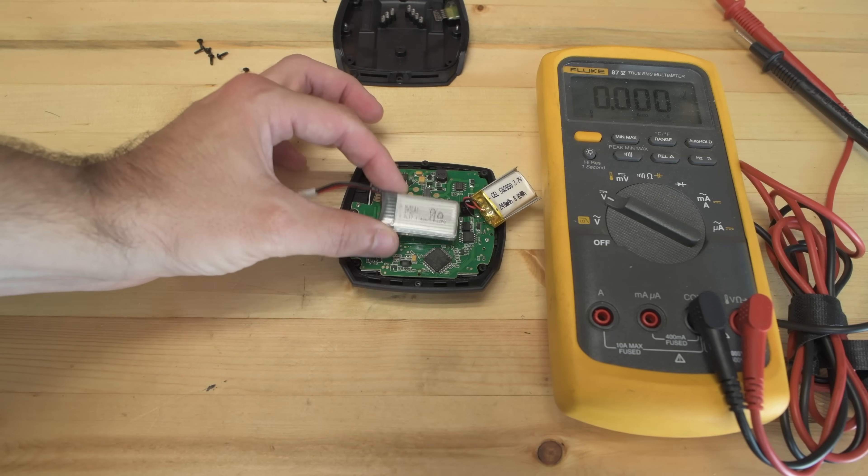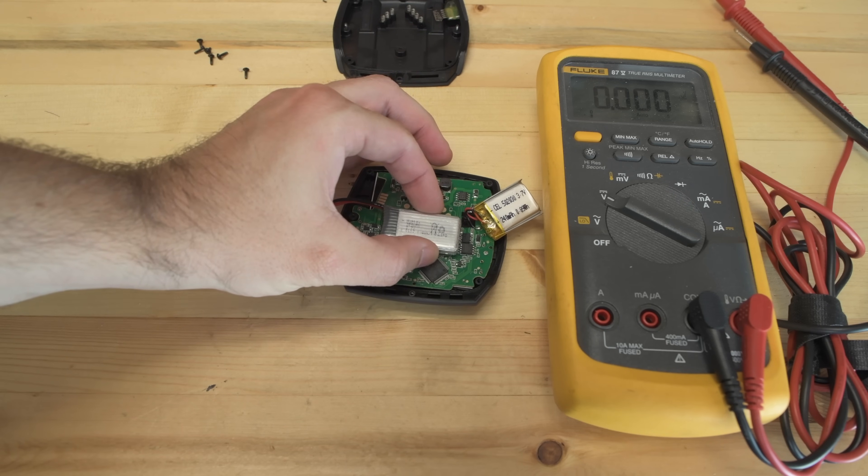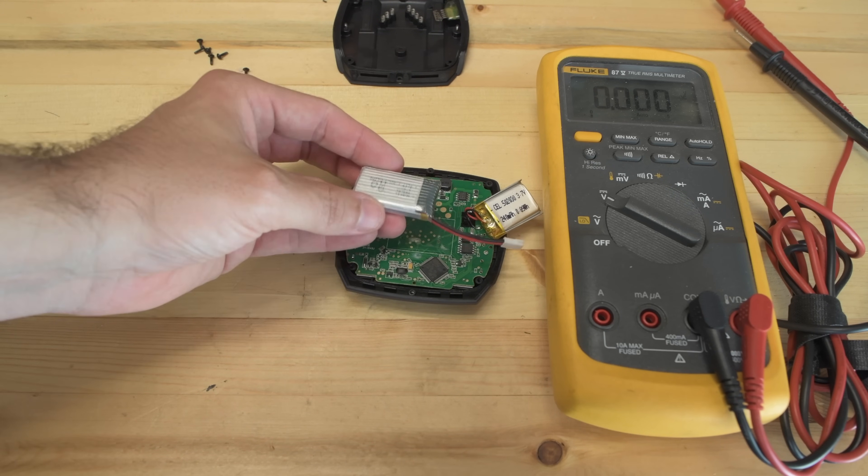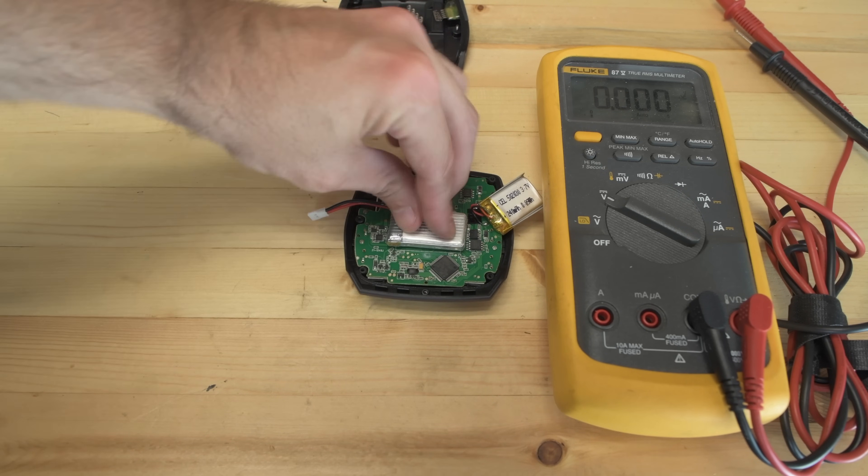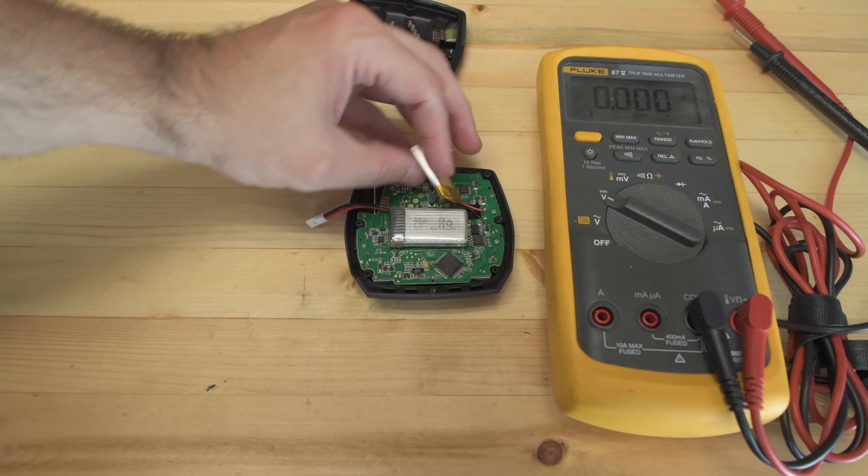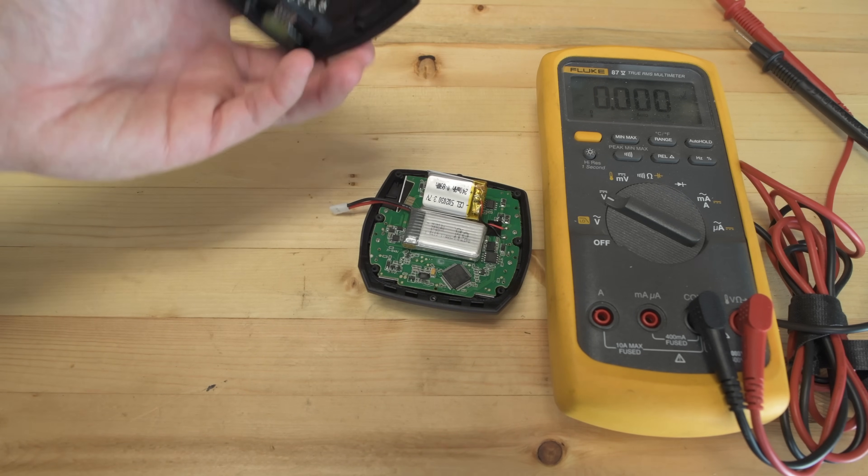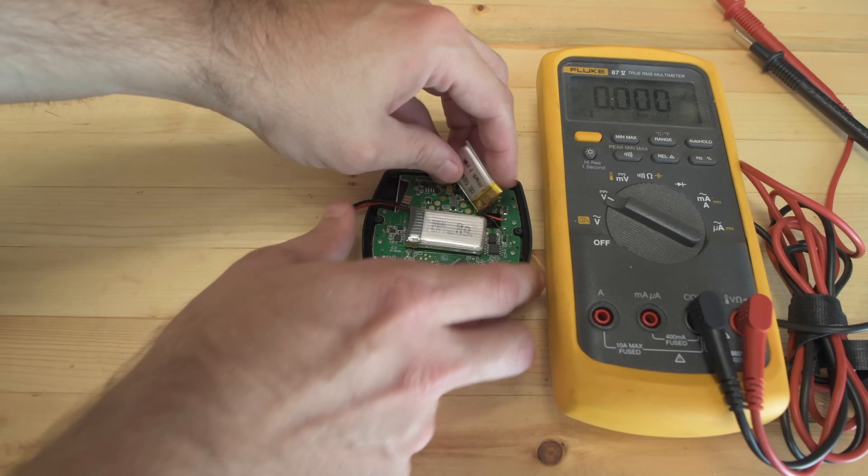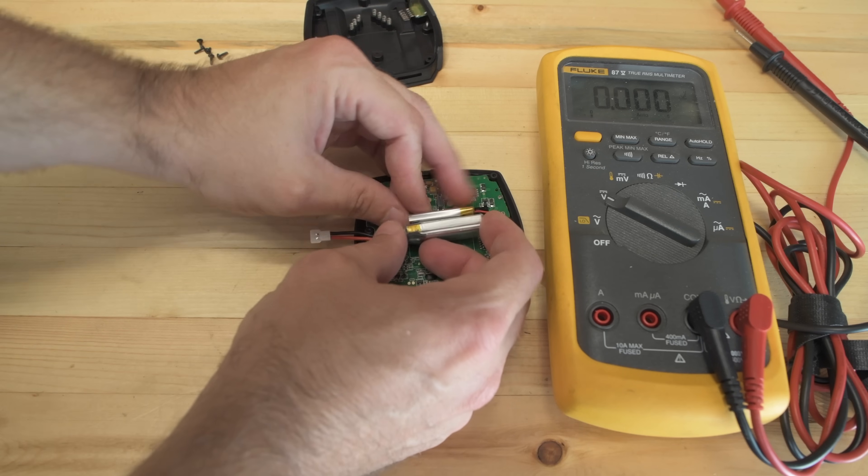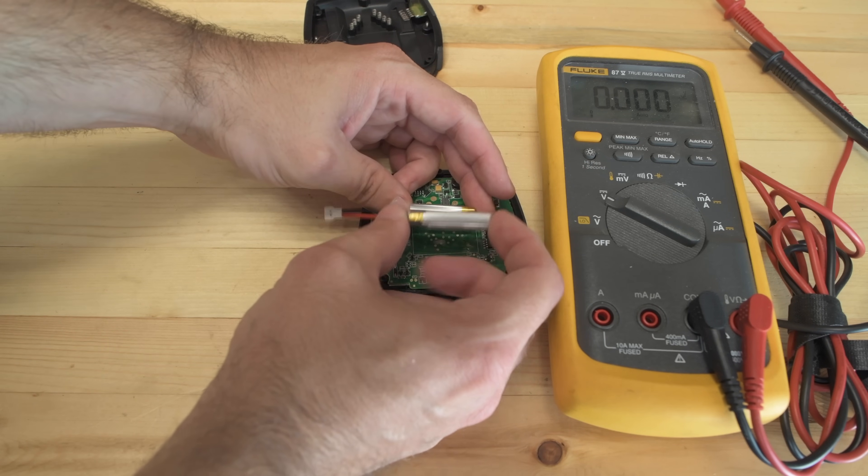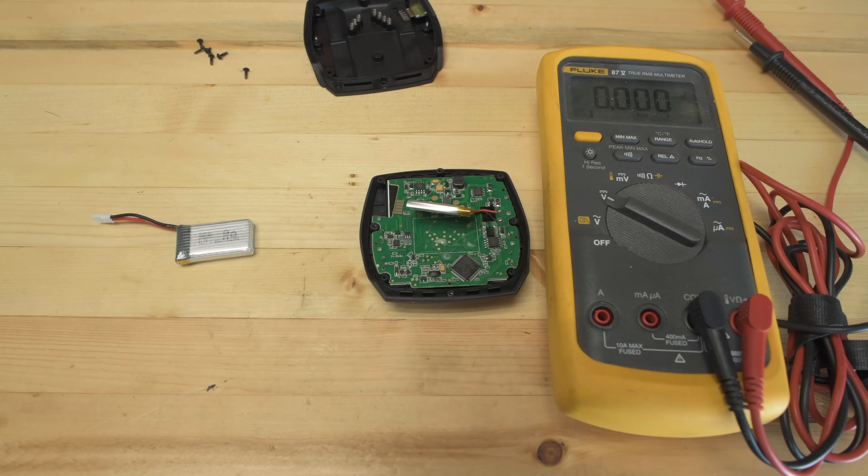It turns out that I don't actually have anything in that range from a hobbyist perspective. The closest thing that I have is this 3.7 volt 330 milliamp hour. This is a little LiPo that I use for flying a little Hubsan X4 RC quadcopter. It might actually fit there. It seems a little thicker. You can see the thickness of it matters quite a bit. So I think what I'm going to do is rather than try to get this one to fit, I'm going to try to order one of these from Amazon or eBay or something. So I will continue this video once I order that part.